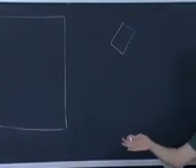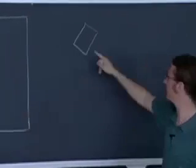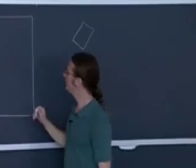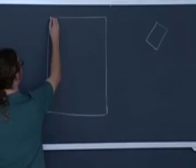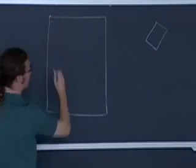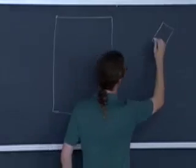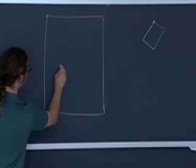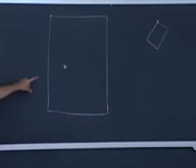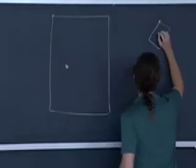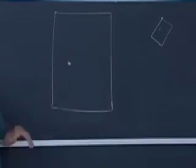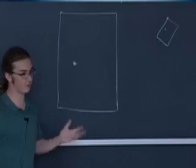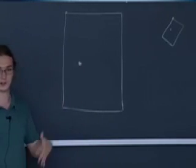Say we had a coordinate transformation between this rectangle and this rectangle. What would happen — it's a function on a point, a two-dimensional point. So say you had the point right here. You apply this transformation to the point, and what you get is this point here. So you have this point here, and you apply the transformation to that point, you'll get this point here. It's just like a little copy of this. So this is a function — this is the function part of iterated function systems.